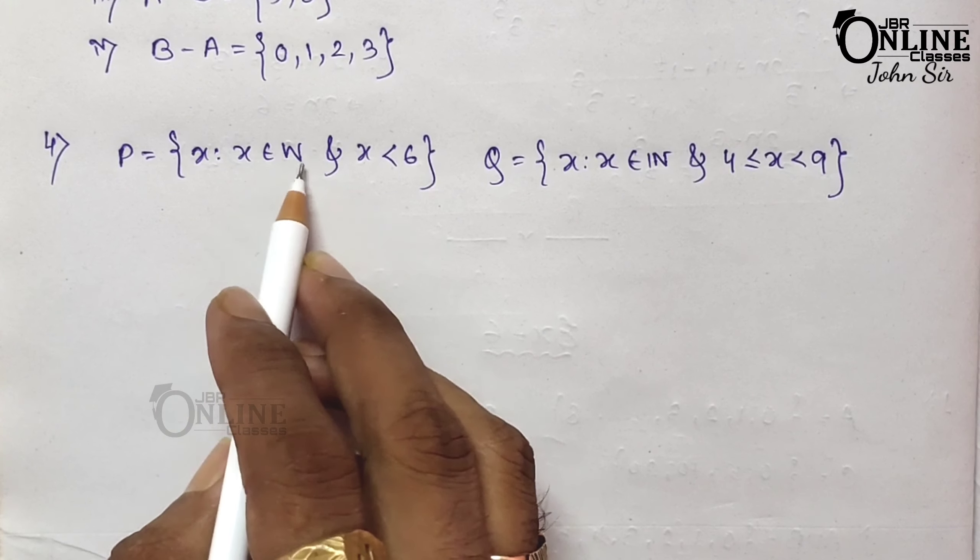A union B = {1, 2, 3, 4, 6, 7, 8}. A intersection B (common elements): {4, 6, 8}. A minus B: removing 4, 6, 8 from A leaves {1, 2, 3, 7}. B minus A: since all elements of B (4, 6, 8) are in A, B minus A is a null set — write two brackets or the phi sign.